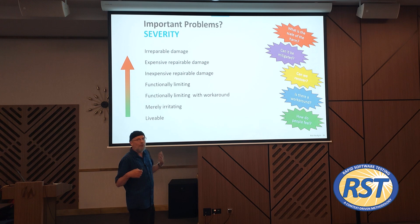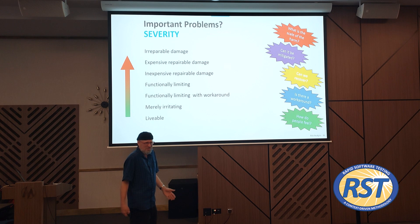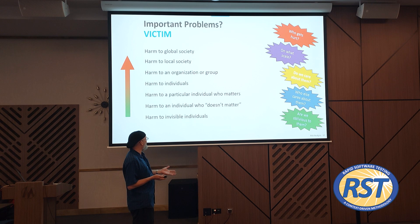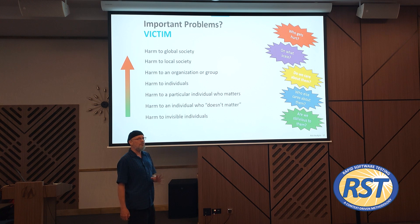Severity and impact — there's a sense of how bad the problem is. Is it irreparable damage or damage that can be remediated? Is it limiting, or just a little irritating, or maybe tolerable — something we can live with? Who is the victim? The victim might be society at large, harm to a local society, an organization, a group, a handful of individuals, or a particular individual who matters to us, or someone we've decided doesn't matter.